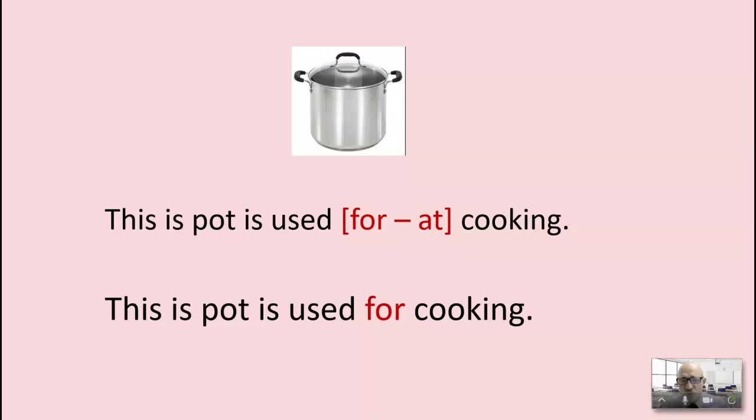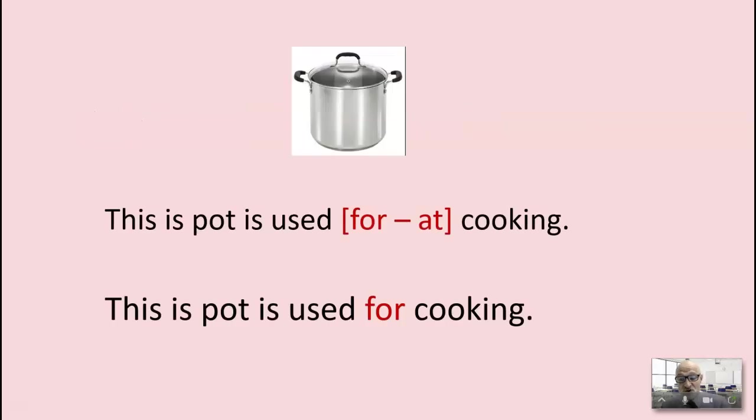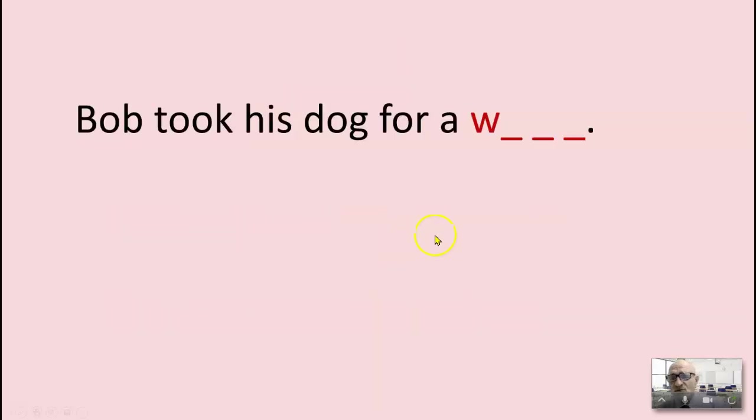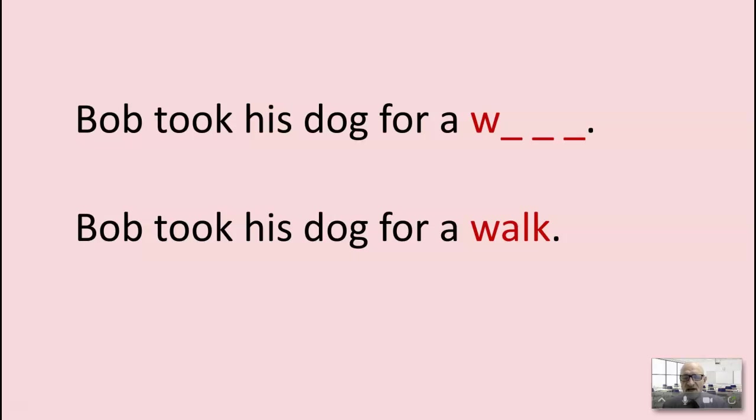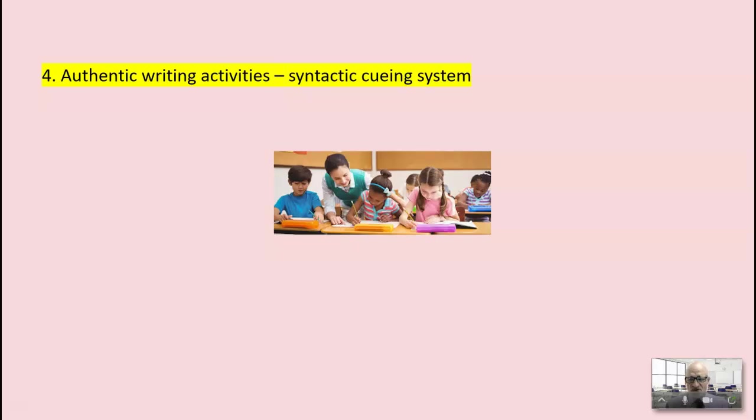Developing the semantic cueing system. Bob took his dog for a... This is an example of a close. A maze, you have choices, two or three words. A close has a word missing or usually a word with a single letter. Bob took his dog for a blank. What word makes sense there? Yes, Bob took his dog for a walk. And then you read it through together. Tom did blank want to go. Tom did not want to go. Here I'm reinforcing a sight word again. So that's the third one.